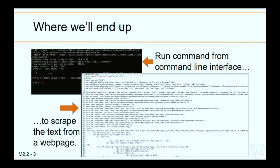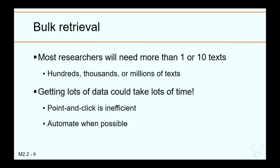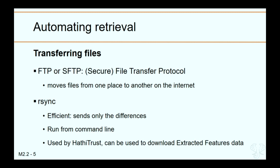There are three different ways to automate the retrieval of text, especially important when thinking about large-scale text analysis. First, providers can make their files available through file transfer mechanisms — FTP (file transfer protocol), SFTP (secure file transfer protocol), or rsync, which is what HathiTrust uses. Rsync is efficient because it only sends the differences between files from the source location to the destination. You run rsync from the command line, and this is what is used to download extracted features data, which we'll work with a bit later today.